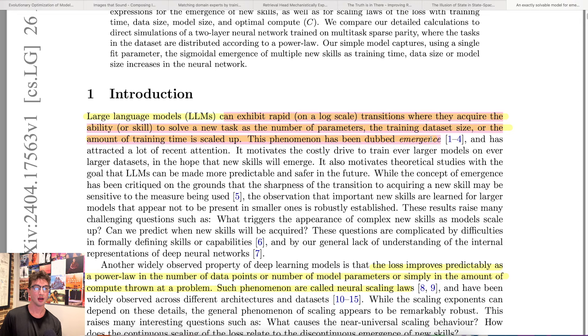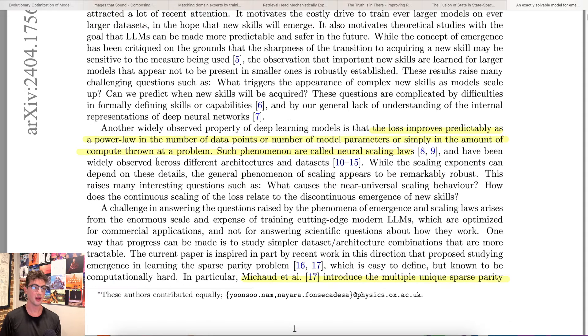The big thing being that rapid transition thing. Even though the loss curves decrease smoothly, it'll all of a sudden just have a new ability almost out of nowhere in that time scale. So the loss improves predictably as a power law in the number of data points or number of model parameters or simply in the amount of compute than a problem. Such a phenomenon are called neural scaling laws. Power law is just the type of speed we're talking about that we observe. Neural scaling laws, a while ago, Google derived how quickly this happens on a predictable basis over the course of many orders of actual scaling the system.